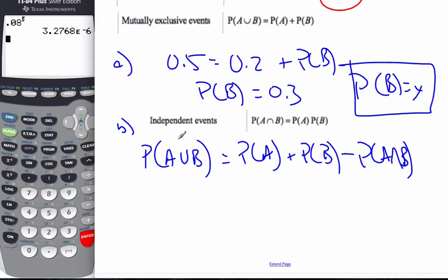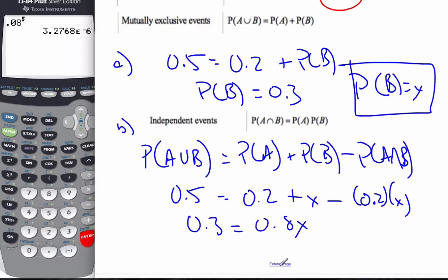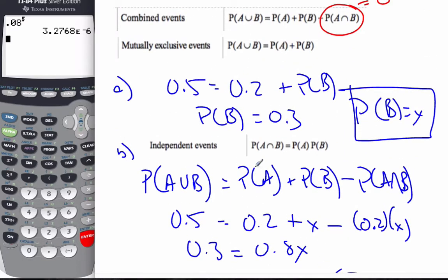Well, I'm going to call P(B) equal to x. And I'm told from the problem this is 0.5. So 0.5 is equal to 0.2 plus x minus P(A and B) is 0.2 times x. So now it's just a matter of solving for x. I subtract the 0.2, I get 0.3 is equal to 1 minus 0.2, 0.8x. So x will be 0.3 over 0.8, which is 3/8 as your x value if they're independent.